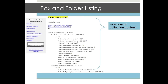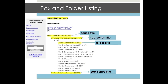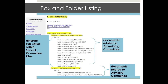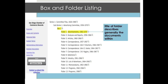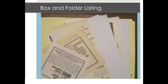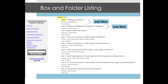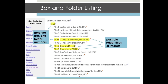The box and folder listing physically inventories the intellectual content of the collection. It records the titles of each series and sub-series in the collection, and the titles of each folder found within each physical box. The series title describes the relationship of all boxes and folders contained in the series or sub-series. In this example, the Advertising Committee and the Advisory Committee are sub-series under Series 1 Committee Files. The folder title describes the nature of the documents contained within the folder — for example, Advertisements 1960–1970 describes generally what can be found in Folder 1. There can be many documents within each folder. Reading the box and folder listing will give you a good idea of what the collection contains and which folders and boxes might hold items related to your topic.